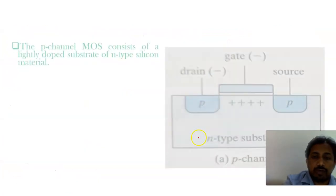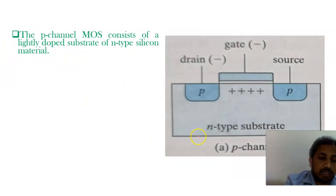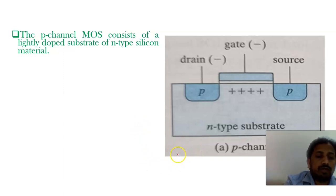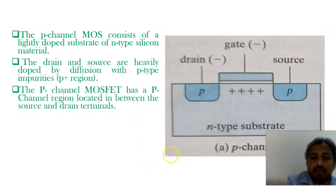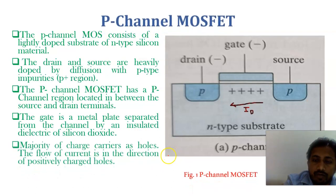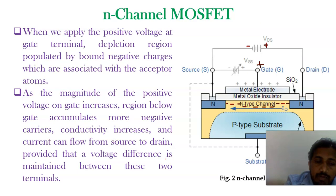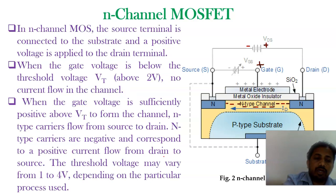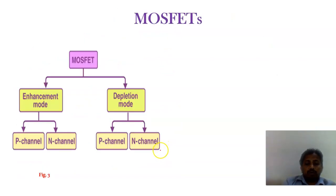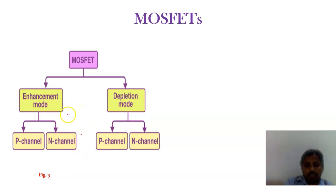MOSFETs are further classified into two categories: enhancement MOSFETs and depletion MOSFETs. For N-channel MOSFETs, we have N-type dopings on a P-type substrate. For P-channel MOSFETs, we have P-type dopings on an N-type substrate.